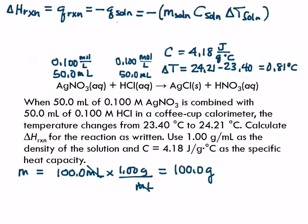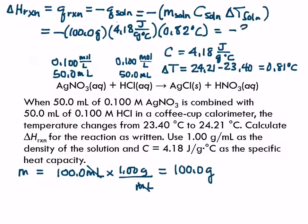Now we have everything we need to calculate the heat of reaction. We've got the mass, oh don't forget the minus sign. We've got the mass, 100 grams. We have the specific heat capacity, 4.18 joules per gram degrees Celsius. We have our temperature change, 0.82 degrees Celsius. 100 times 4.18 times 0.82. So minus 342.75. And what's the unit on that? The grams cancel out. The degrees Celsius cancel out. And the only unit left is joules.